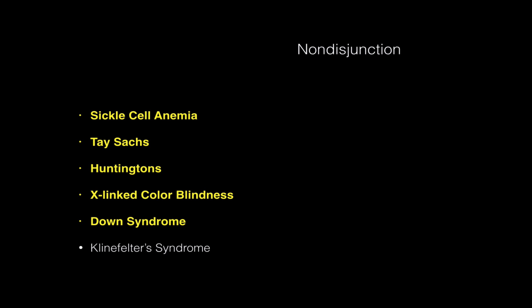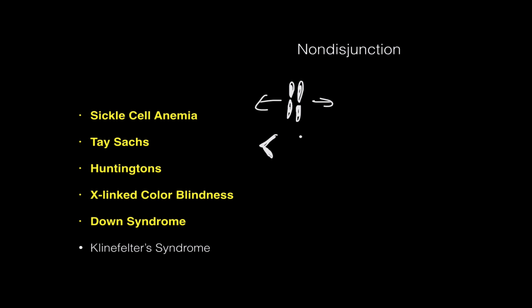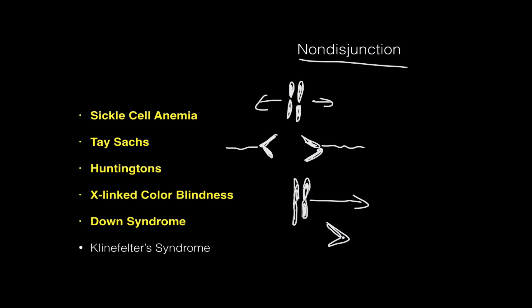Down syndrome is caused by something called non-disjunction. Non-disjunctions occur when chromosome homologous pairs don't separate during meiosis. You have a chromosome pair, and they're supposed to separate — during meiosis I you're supposed to end up with one homologous chromosome going one way and one going the other, pulled by spindle fibers. But what happens in a non-disjunction is this homologous pair stays together and they both go the same way. So you end up with nothing in one cell and two copies in the other.